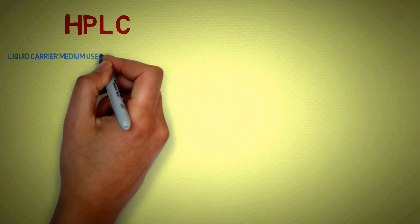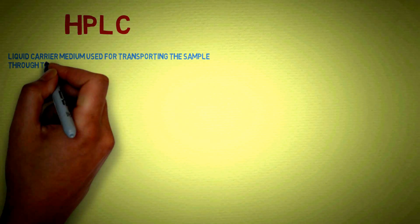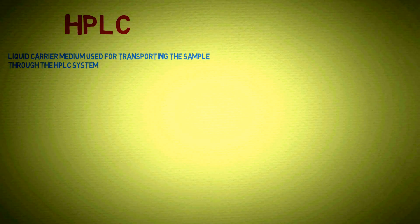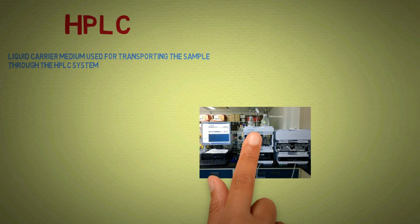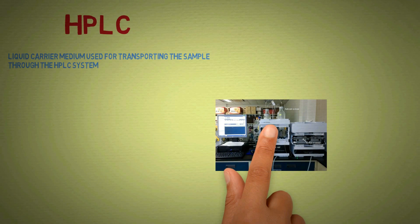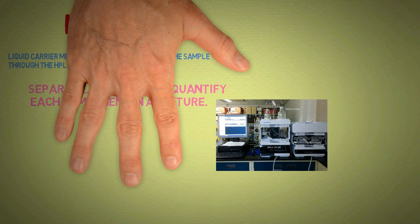HPLC is a liquid chromatography technique, so liquid carrier medium is used for transporting the sample through the HPLC system. Most of the time we use multiple solvents for better performance as gradient flow is more suitable than isocratic flow.